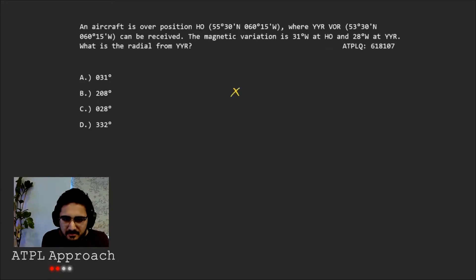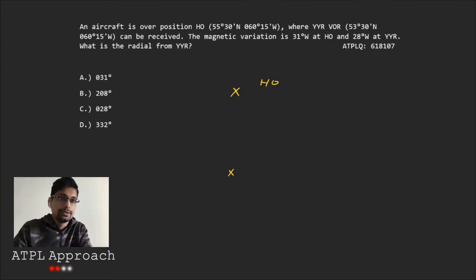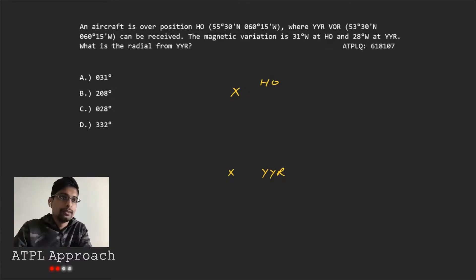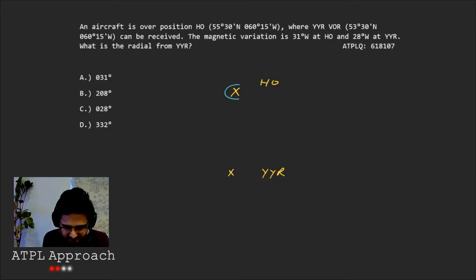There we go. H, if I can draw correctly, HO. And now we need to figure out where are we? Where's the aircraft? Right. The aircraft is over HO. So it's over there. And we're reading the radial from Yankee Yankee Romeo, right?